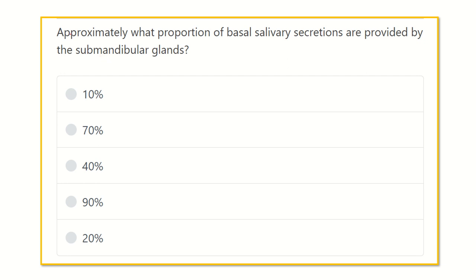It is one of the important questions — they want to know about the basal salivary secretion provided by the submandibular gland. The answer options are 10%, 70%, 40%, 90%, and 20%. We have to find out the salivary secretion provided by the submandibular gland.